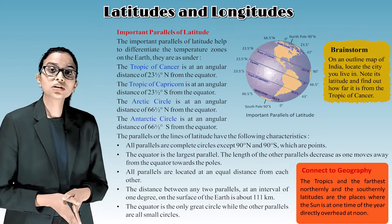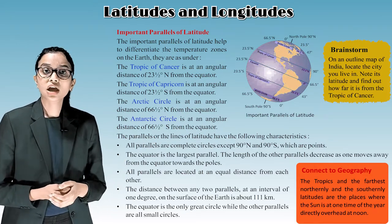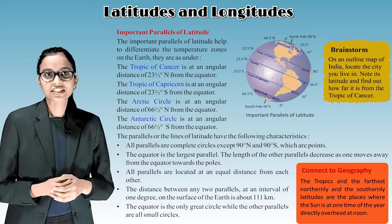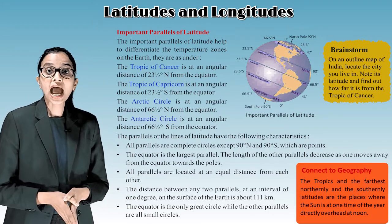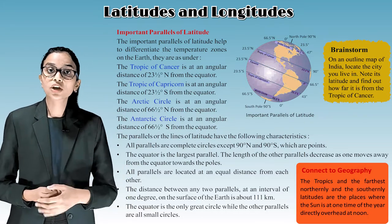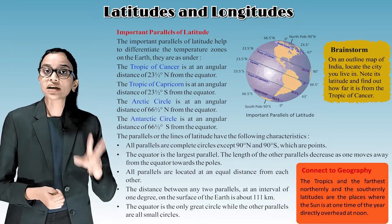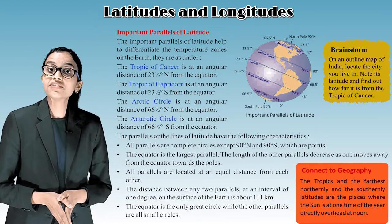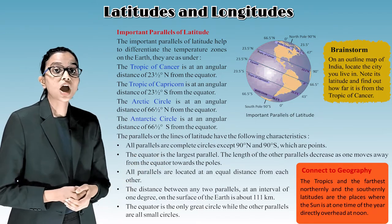The parallels or lines of latitude have the following characteristics. First, all parallels are complete circles except 90 degrees north and 90 degrees south, which are points. The equator is the largest parallel. The length of the other parallels decreases as one moves away from the equator towards the poles. All parallels are located at an equal distance from each other. The distance between any two parallels at an interval of one degree on the surface of the earth is about 111 km. The equator is the only great circle, while the other parallels are all small circles.